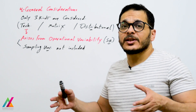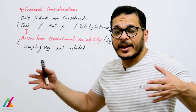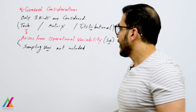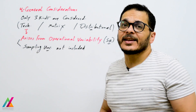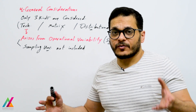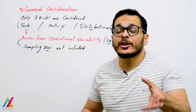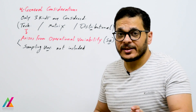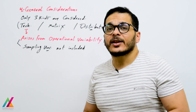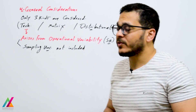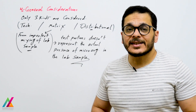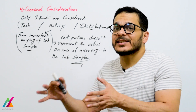Technical uncertainty arises from operational variability — analyzing samples by different analysts on different days over a long time scale — yielding the standard deviation of reproducibility. This is the largest source of uncertainty in the whole process from sampling through analysis. Note that sampling is not included in this standard; sampling uncertainty is calculated separately and will be covered later in this training course.